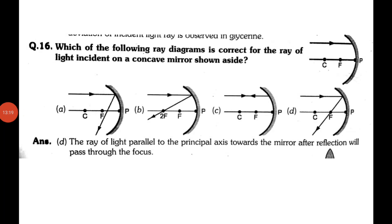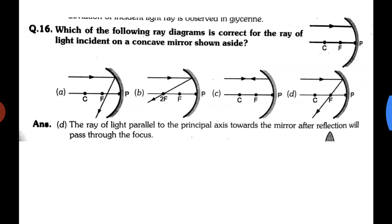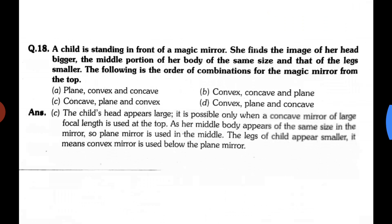Next question: which ray diagram is correct for a ray of light incident parallel to the principal axis on a concave mirror? A ray parallel to the principal axis will pass through the focus after reflection. Option A is wrong — it does not pass through the focus. Option 2 passes through 2F, which is also wrong. The correct diagram must show the ray passing through the focus.